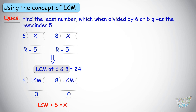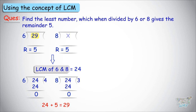Now, we need to find the lowest number which, when divided by 6 or 8, gives a remainder of 5. Adding 5 to 24 gives 29, so the answer is 29. Let's check: divide 29 by 6 and by 8. In both cases, you will get a remainder of 5.